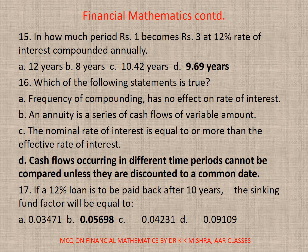Question 15: In how much period does rupees 1 become rupees 3 at 12% rate of interest compounded annually? The correct option is D — 9.69 years. Obviously this needs to be calculated; the annuity formula applies in all such cases.